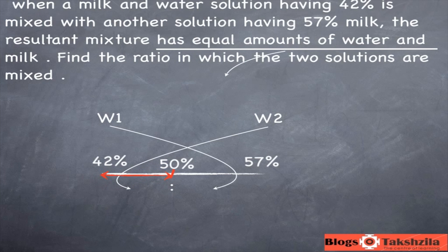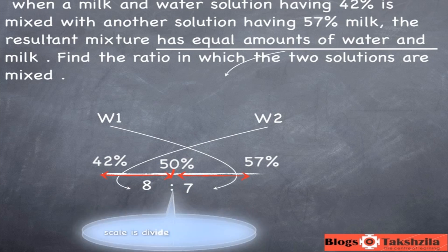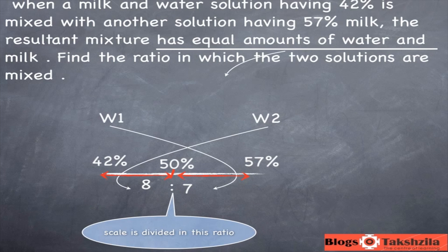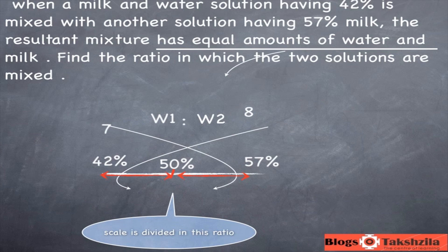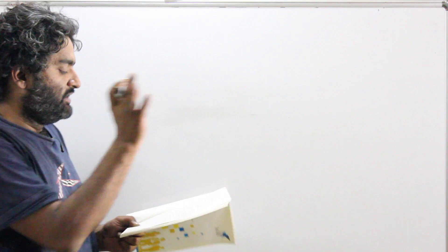The difference between 50 and 42 is 8, and the difference between 50 and 57 is 7. The ratio at the bottom would be 8 to 7, but we flip it when putting on top, so the ratio becomes 7 to 8. The question asks for the ratio in which the two solutions are mixed, so the ratio of quantities of the two solutions is 7 to 8.